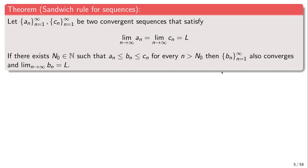Let's prove the sandwich theorem for numerical sequences. The name is quite intuitive: it describes the situation where we have three sequences a_n, b_n, and c_n such that, starting from some index n_0, for every n greater than n_0, b_n is squeezed between a_n and c_n. If, in addition, a_n and c_n are both convergent and converge to the same limit L, then b_n is forced to converge to the same limit L.